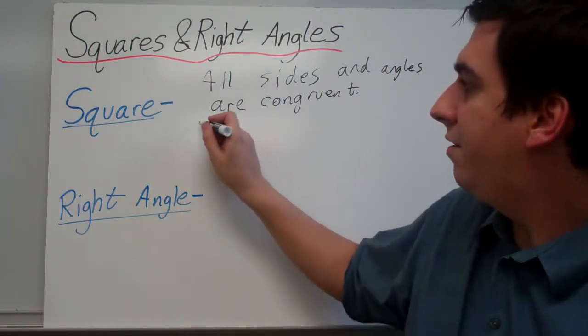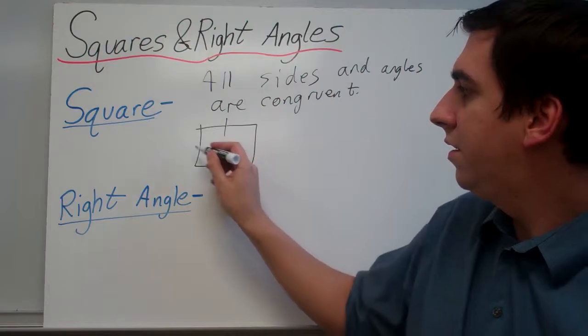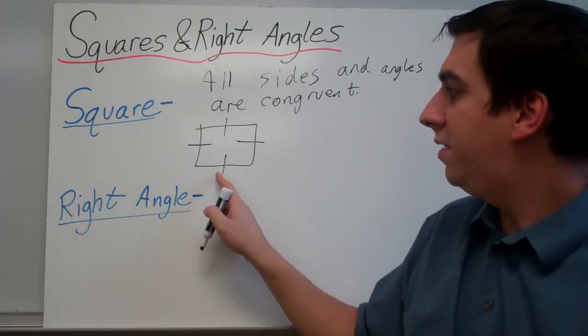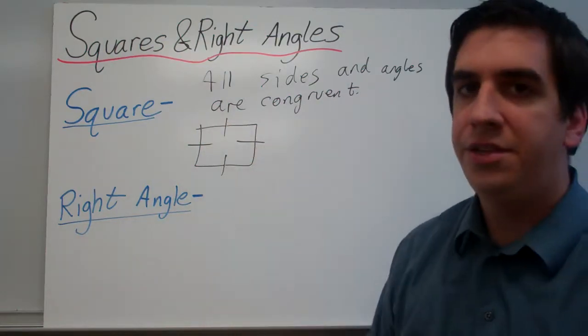And if I draw that out, we're going to use these tick marks to show that this side is the same length as this side, which is the same as each of the other two sides.